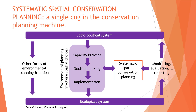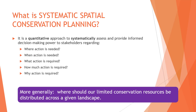So what is systematic spatial conservation planning? It is a quantitative approach to systematically assess and provide informed decision-making power to stakeholders regarding where action is needed, when action is needed, what action is required, how much action is required, and why action is required. More generally, this means where should we invest our limited conservation resources across a given landscape.